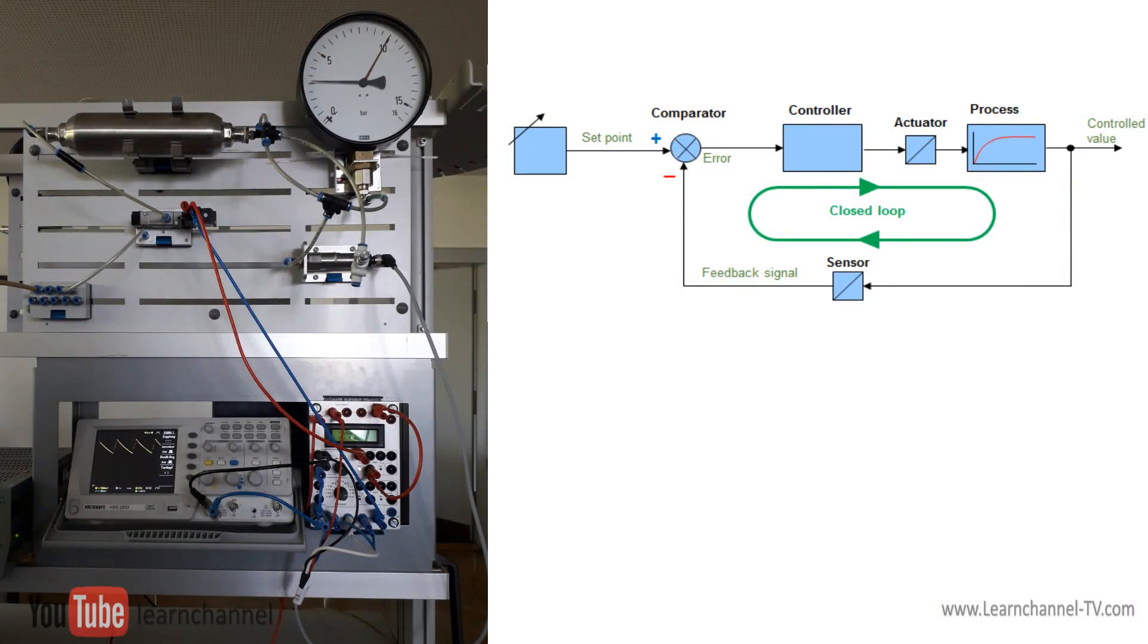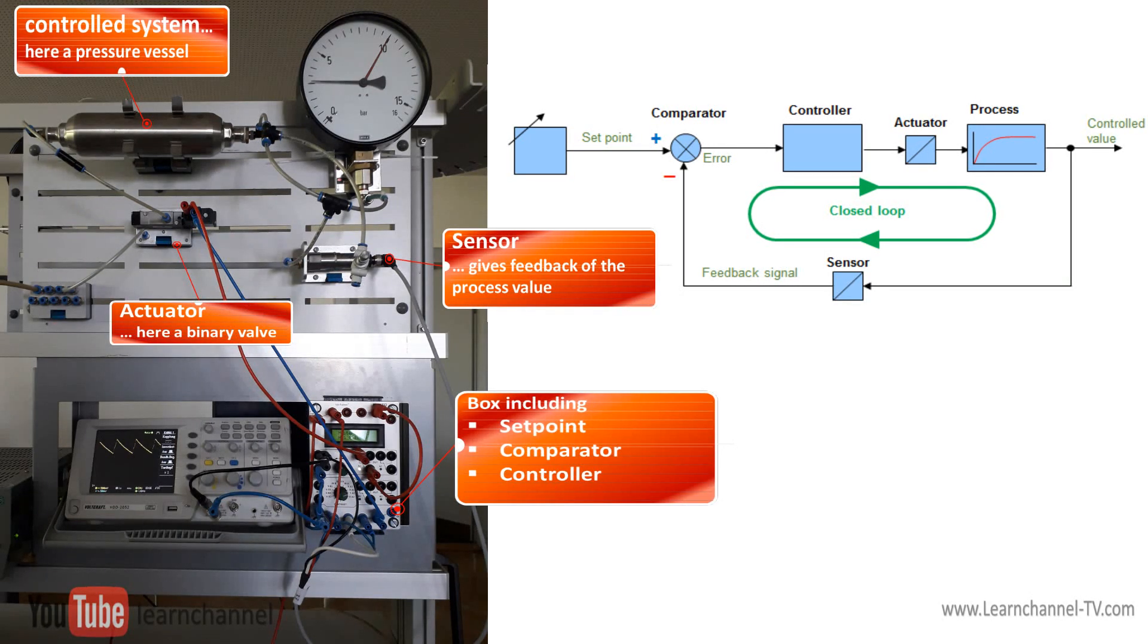First, let us discuss what a closed loop control is, also called feedback control in general. Here you see its typical block diagram. The process value, here pressure, is built within the controlled system, in our case the pressure tank. The process variable has to be compared steadily with the desired value, so a sensor delivers the feedback signal. In other words, no closed loop without the sensor.